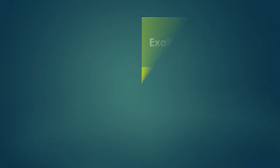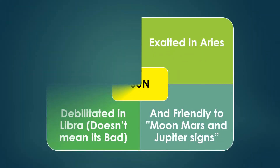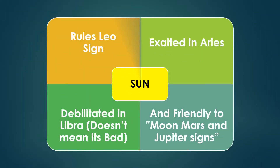Sun gets exalted in Aries from 0 to 20 degrees. Leo is its Moolatrikona Rashi, and from 20 to 30 degrees Leo it is in its own house — neither exalted nor Moolatrikona, just in Leo's own house.